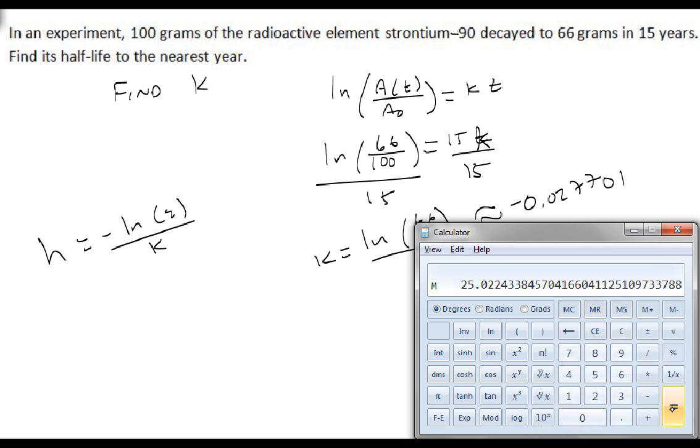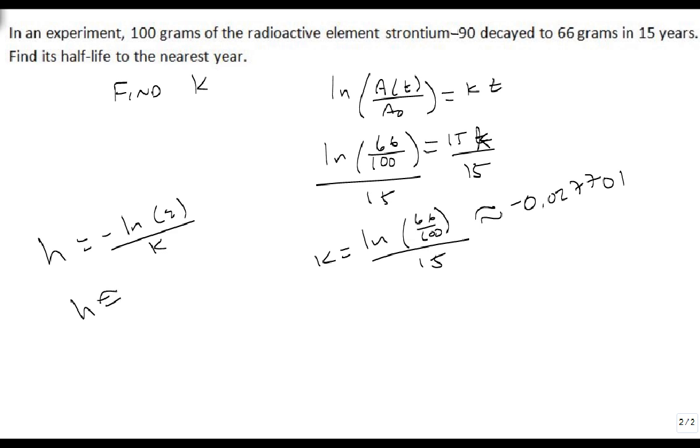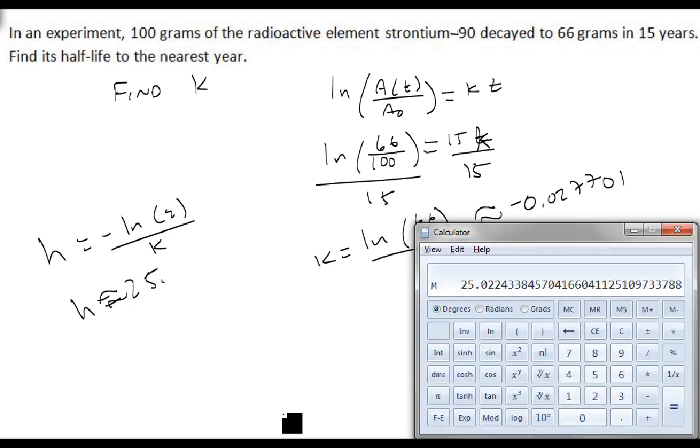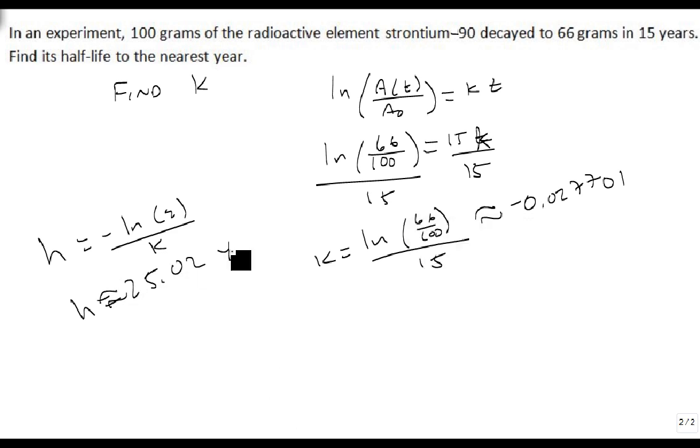So that says that its half-life H is approximately 25.02 years. Every 25.02 years, the strontium-90 decays to half of the size it started as. And so that's how we can use this formula to solve for half-life.